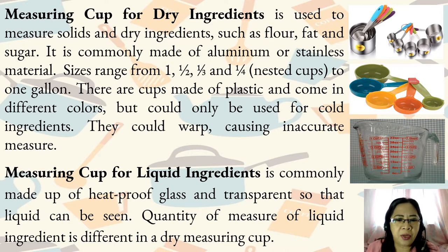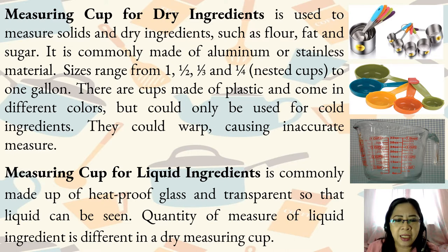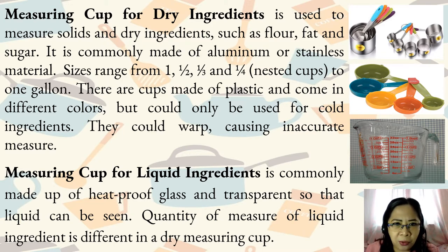Measuring cup for liquid ingredients is commonly made of heat-proof glass and is transparent so that liquid can be seen. A measuring cup for liquid ingredients looks like a pitcher made of glass, that is why we can measure hot or cold ingredients as long as it is in liquid form.